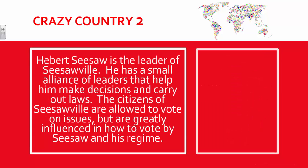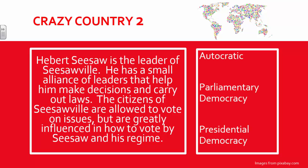Another example is Herbert Seesawville. He is the leader of Seesawville, with a small alliance of leaders that help him make decisions and carry out laws. The citizens of Seesawville are allowed to vote on issues, but are greatly influenced in how to vote by Seesaw and his regime. Based on the clues, this government is autocratic. This is a good time to talk about the fact that voting does not equal democracy — lots of countries vote, but their elections are either not free or their leadership controls what can be voted on.